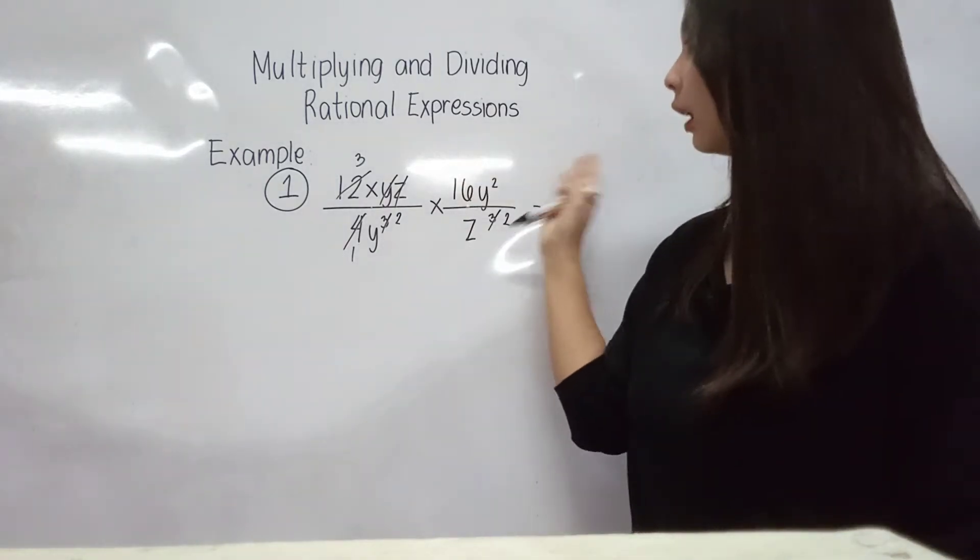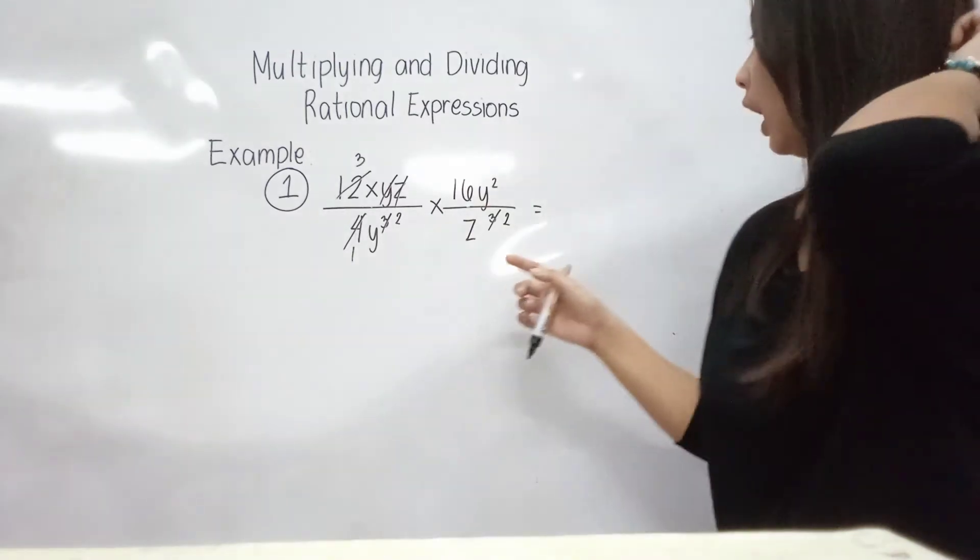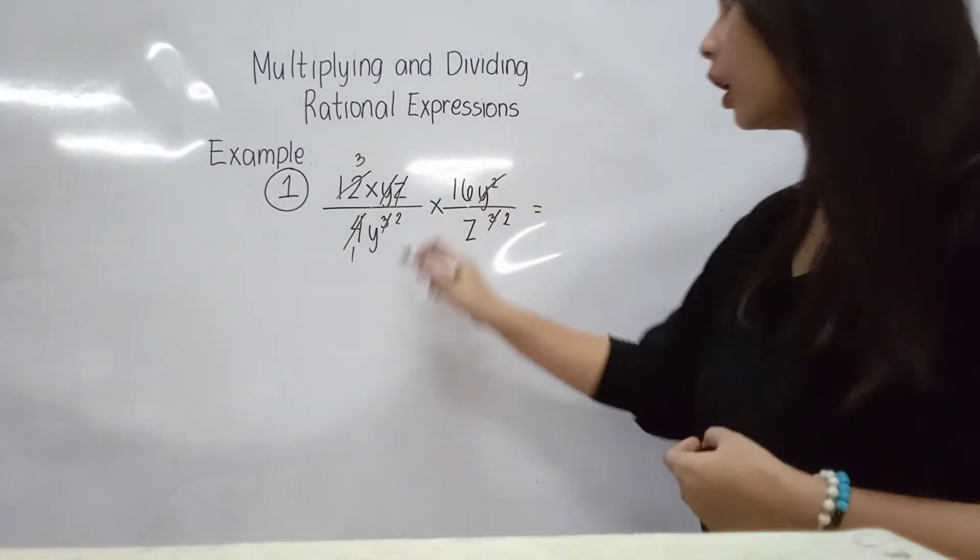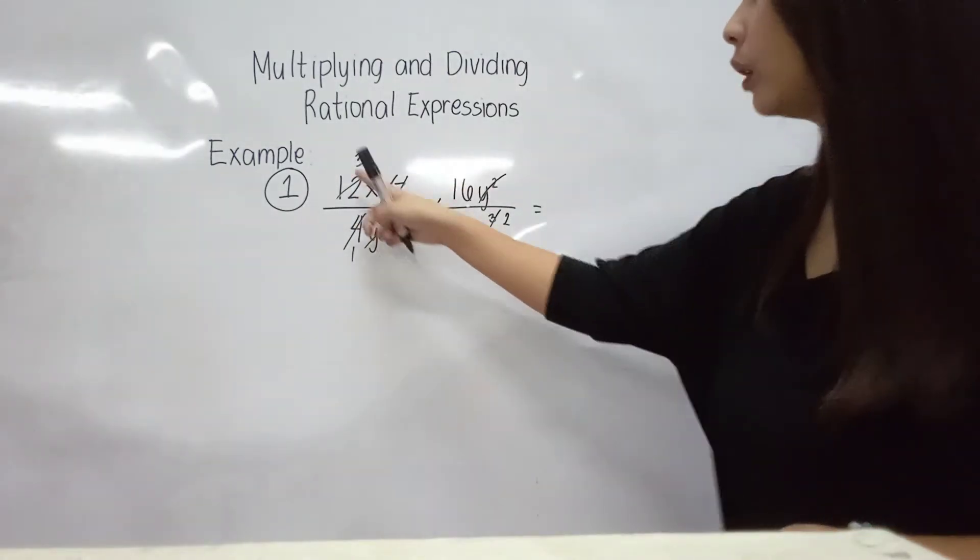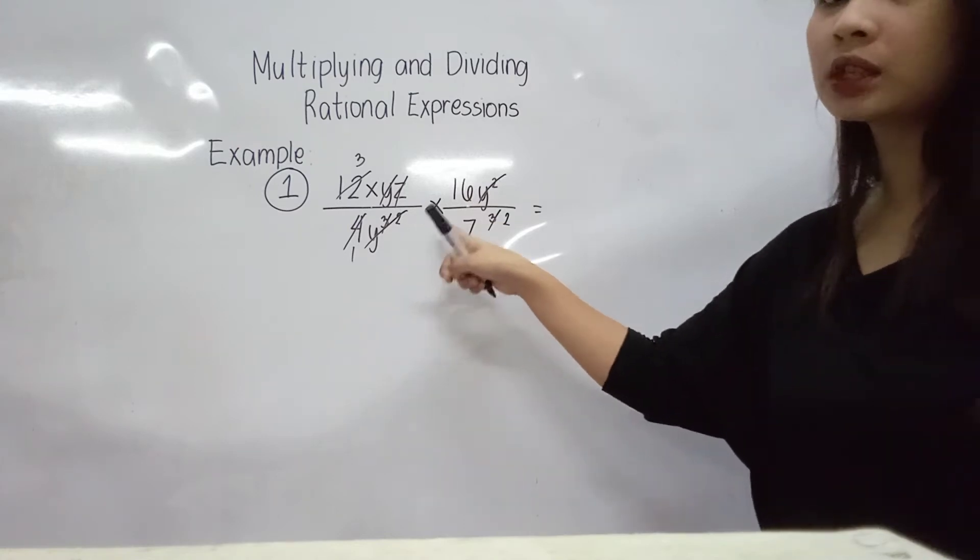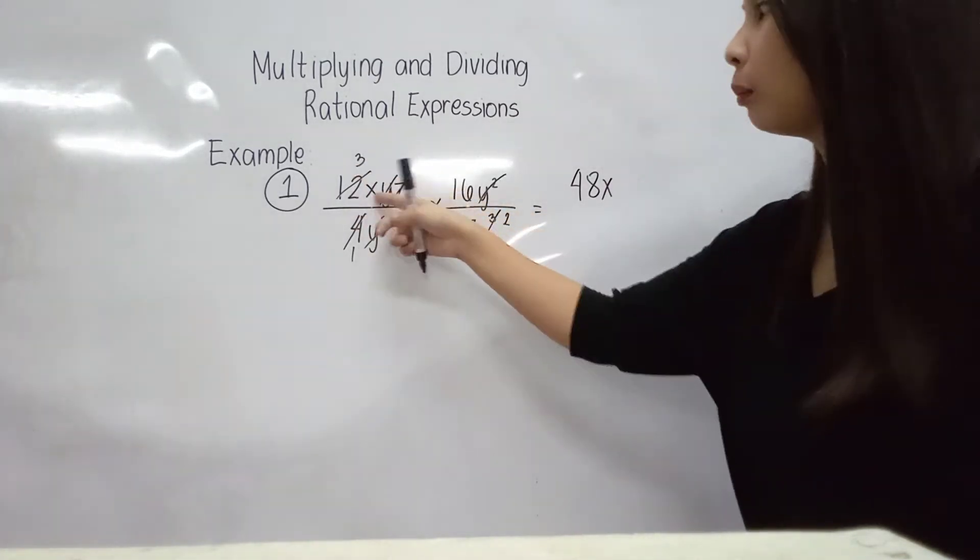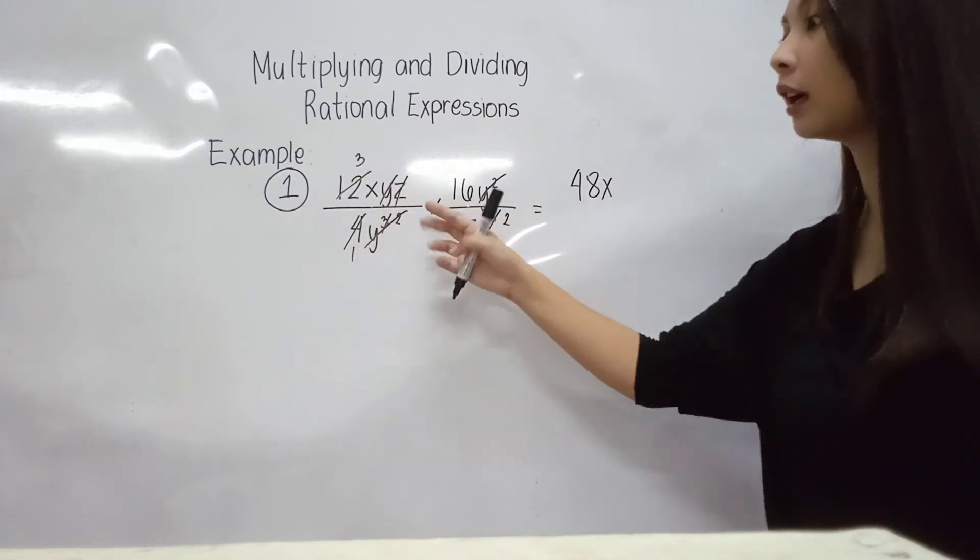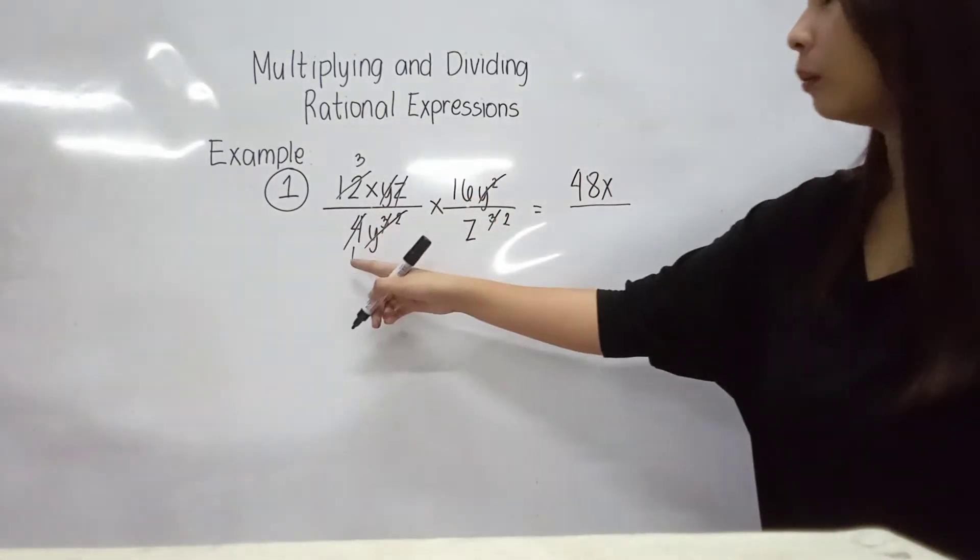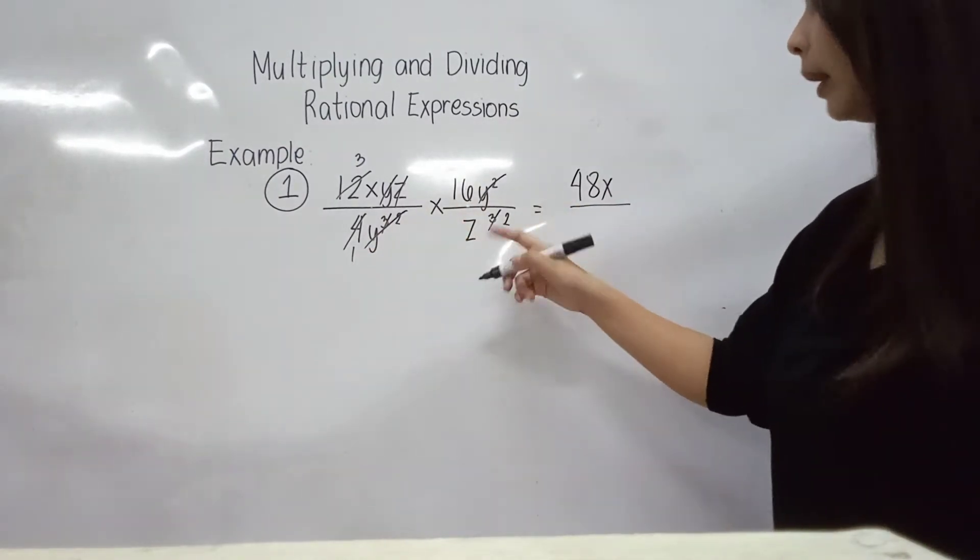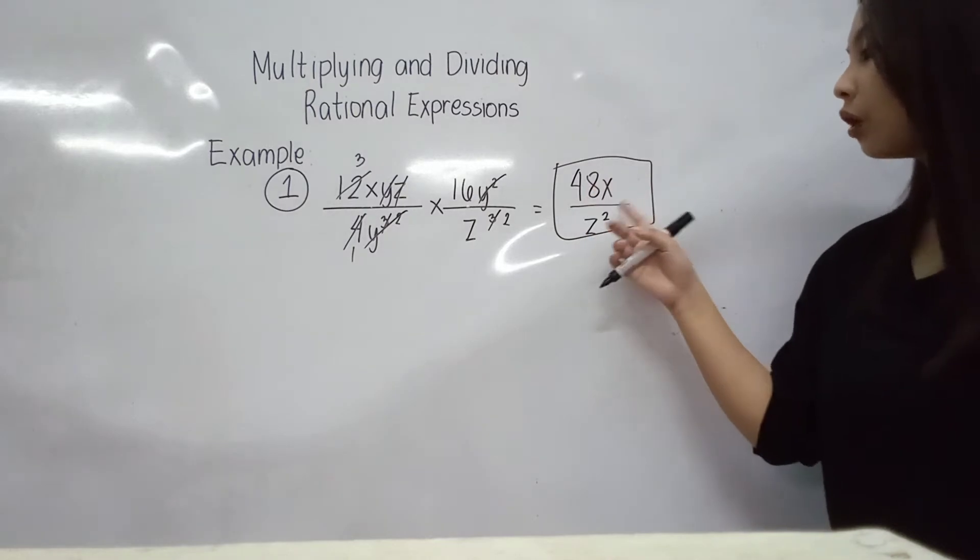Next, how about sa itong side naman? 16y squared and then ito - 1 na lang to, 16, wala na tayo maka-cancel out. How about si y squared and y squared? Pwede pa po yun, so pwede natin siya i-cancel out ulit. So ngayon, ano yung mga natira? Yun na yung answers natin. So we have 3x times 16. Wag pong kakalimutan si multiplication sign. So we have 48x. Next, 1 times z squared. So ibig sabihin, ito yung ating final answer - 48x over z squared.